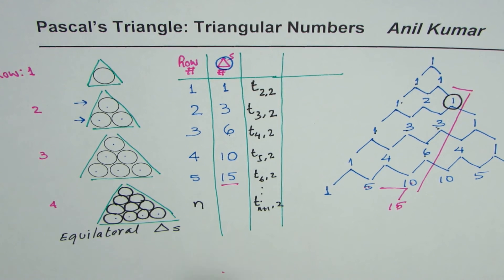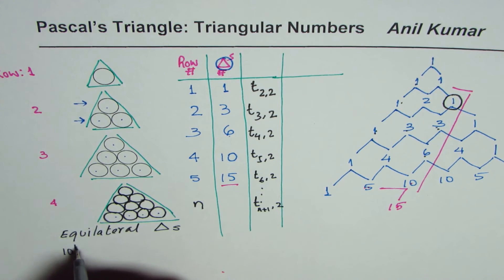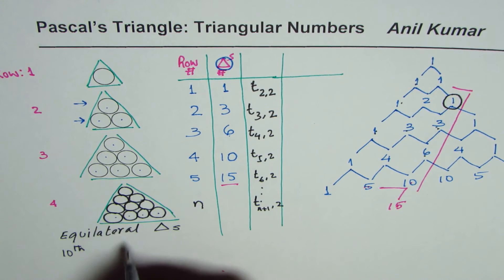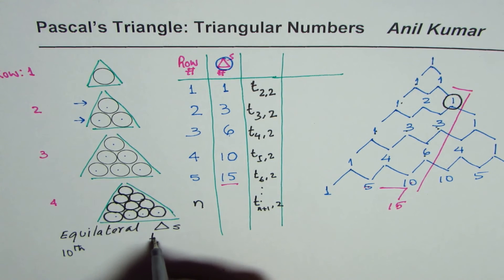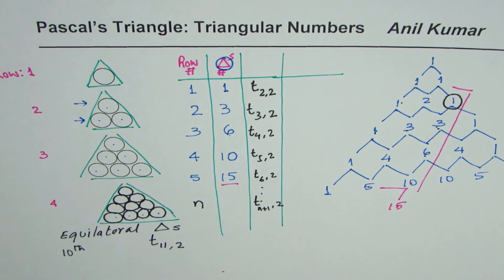Do you get the idea? So if I have 10th row, for example, and if I make this pattern, then the number of circles will be how many? T_{11,2}. Do you see that? So we can expand and get the result.